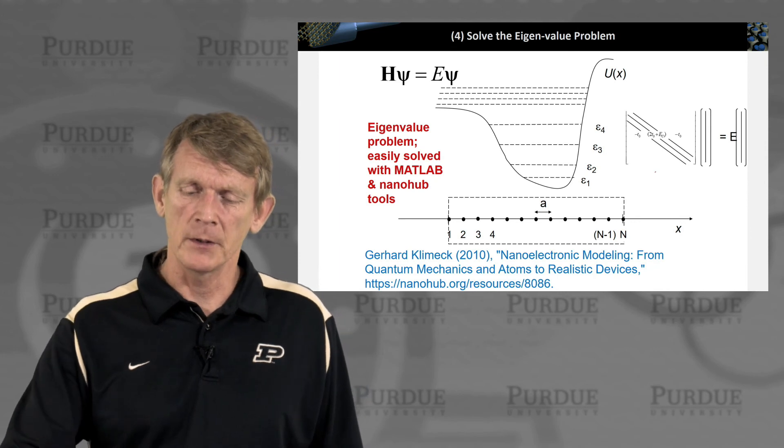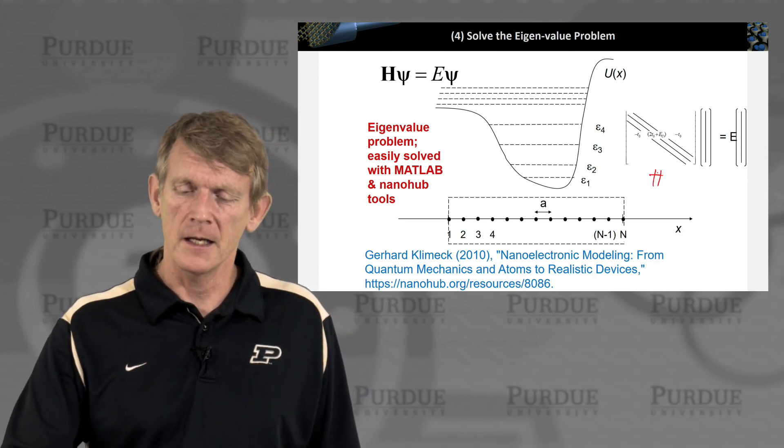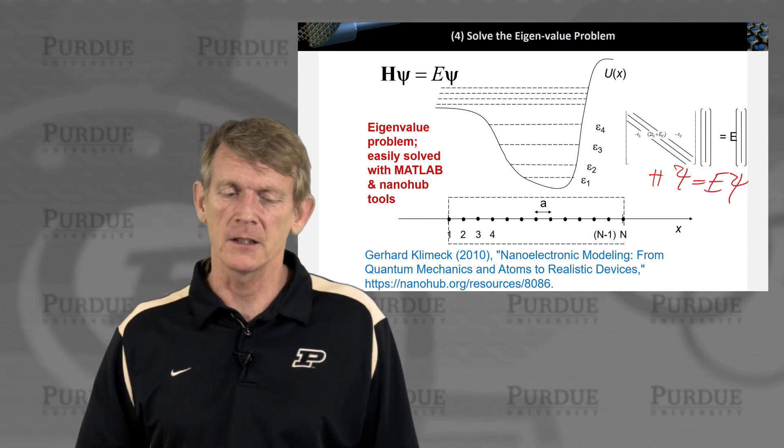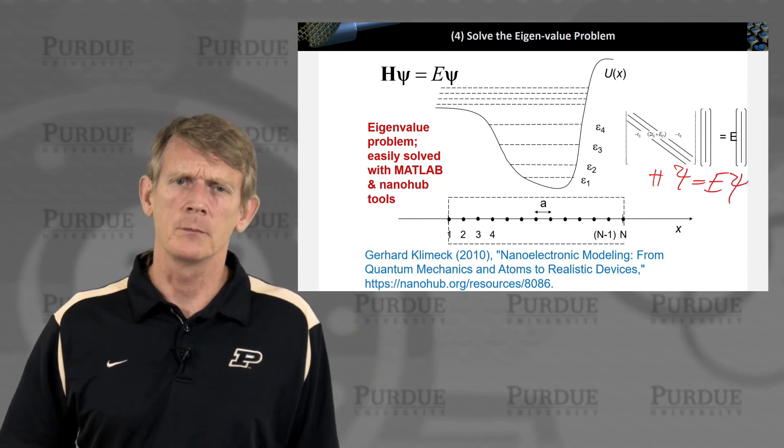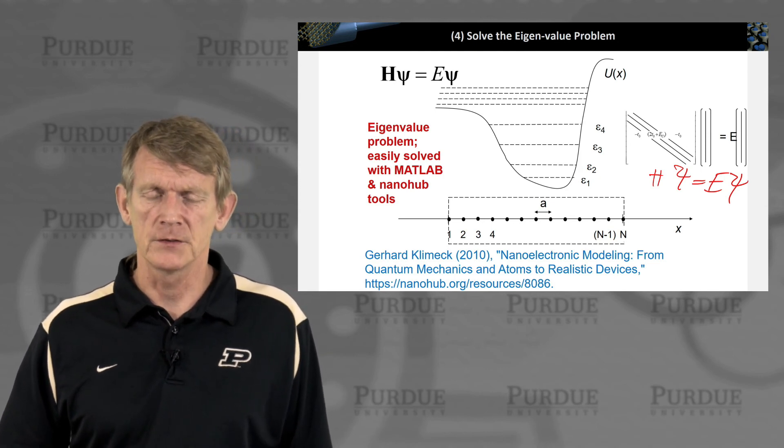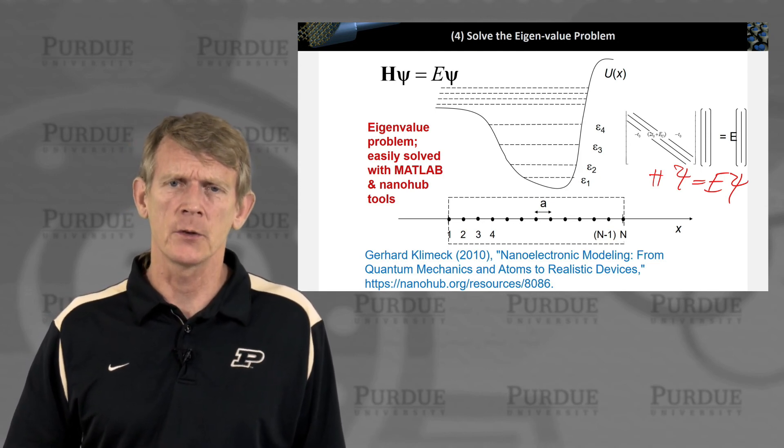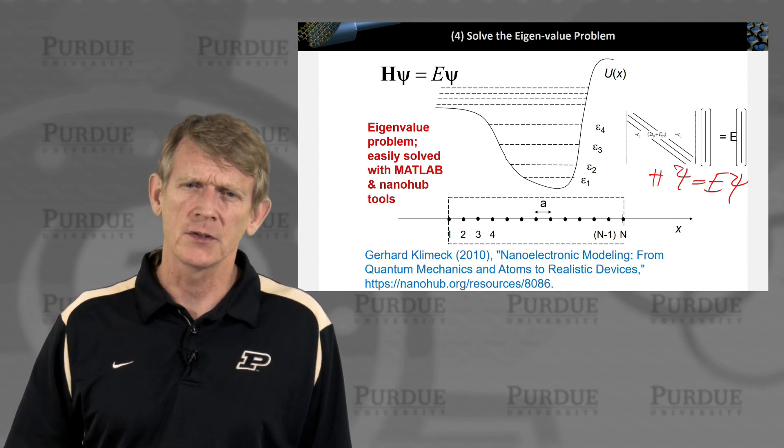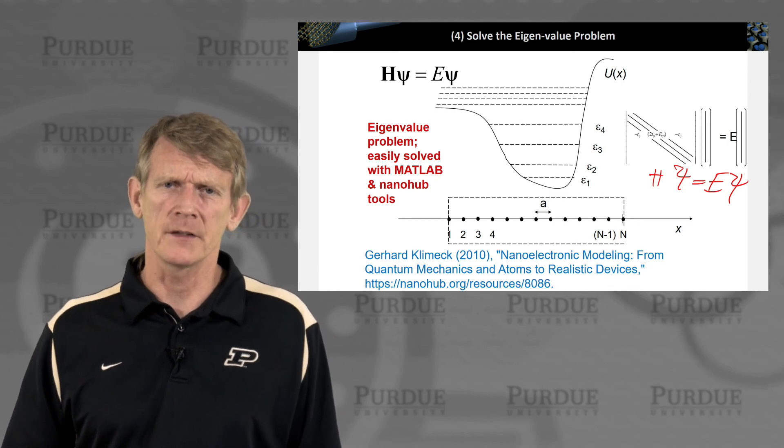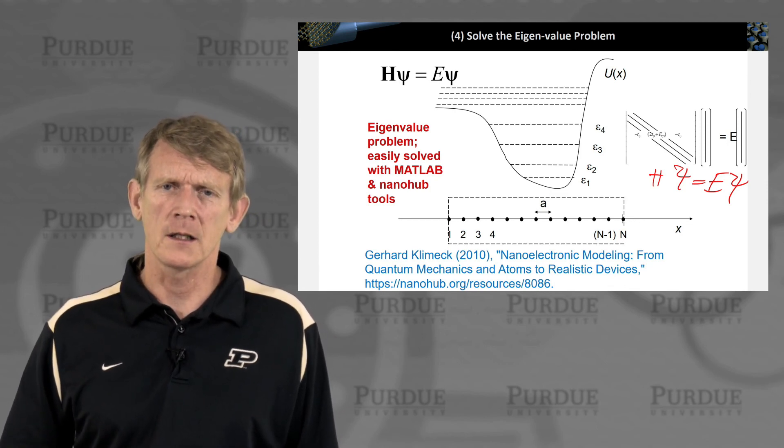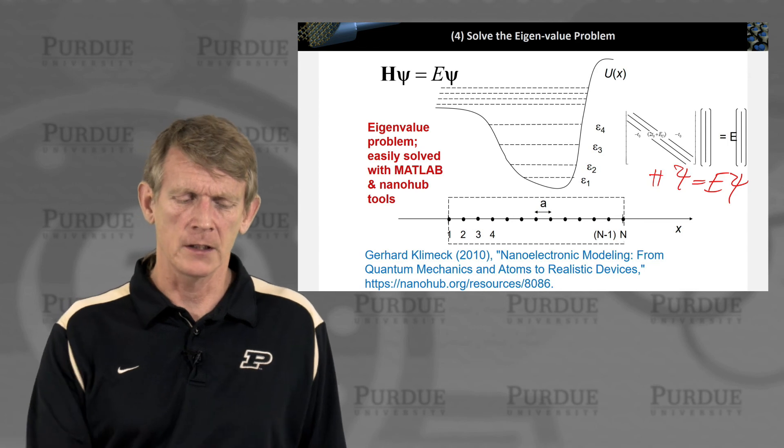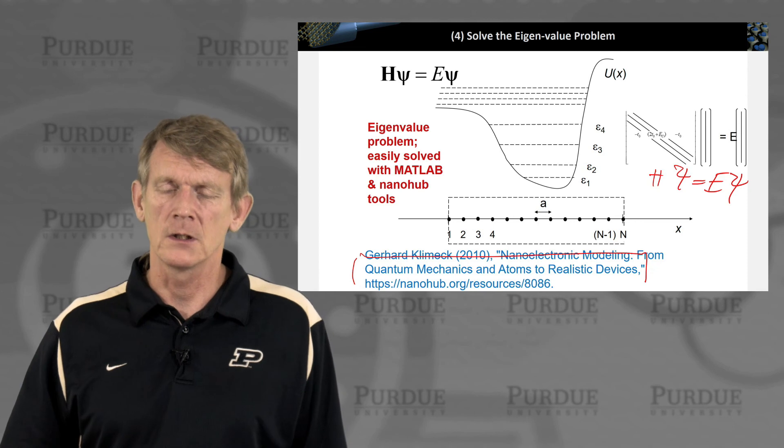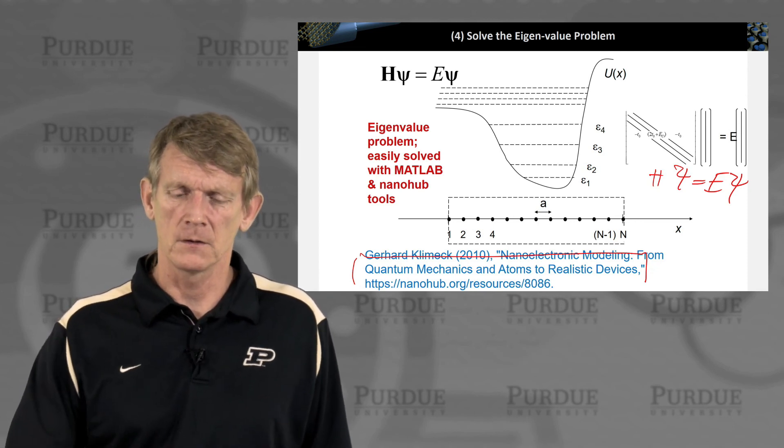So you can represent a system Hamiltonian, h psi equals E psi, and turn this into an eigenvalue problem that you can use in MATLAB. And there's nanoHUB tools that can also do this for you. And if you want to know more about how to solve this for open systems and find solutions that are faster or numerically more efficient, I invite you to look at the course I have on nanoHUB, quantum mechanics and atoms to realistic devices. So here's the reference to that.